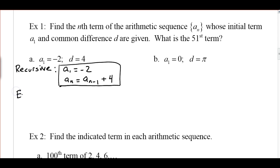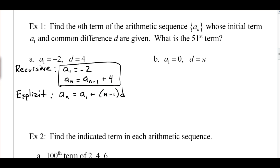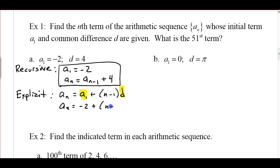Now let's take a look at the explicit formula. Our general formula for an arithmetic sequence is a sub n equals a sub 1 plus n minus 1 times d. We know the first term and we know the common difference, so we'll substitute those in and do a little simplifying. We get a sub n equals negative 2 plus n minus 1 times 4. If we distribute and combine like terms, we end up with a sub n equals 4n minus 6. There's our explicit formula.